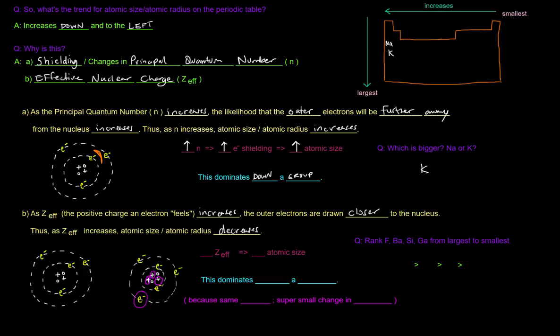What ends up happening is that because we have more positive charge in the nucleus, that increases the actual nuclear charge and it also increases the effective nuclear charge. The charge that these electrons out here actually feel is greater and so they're pulled in towards the nucleus even closer.